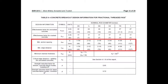When designing with post-installed anchors, the minimum anchor spacing and the minimum edge distance are derived from testing. These values will be given in the Evaluation Service Report for each anchor, and they are also included in the PROFIS Anchor database for that anchor.